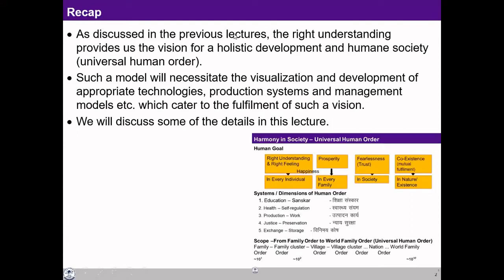We need to have technologies and management models which are in line with holistic development and this human society. We need clarity about how these production systems, technologies, and management models would look like if we want to make sure they are meaningfully contributing to the fulfillment of the human goal and ensuring this human society.